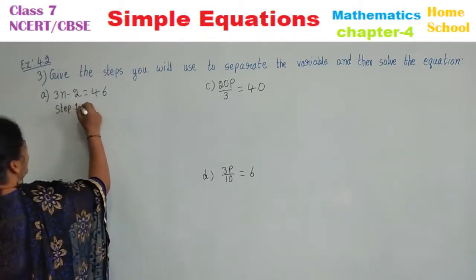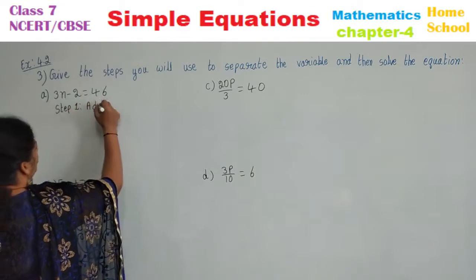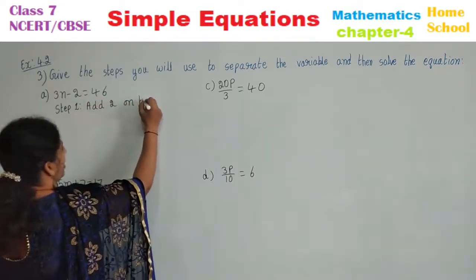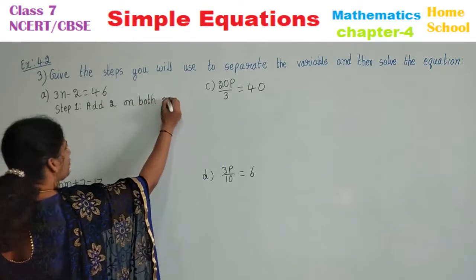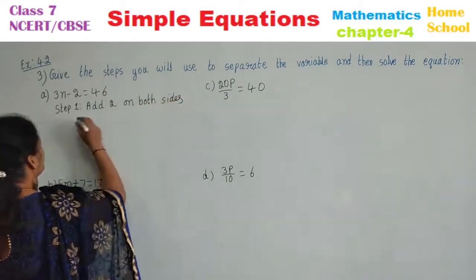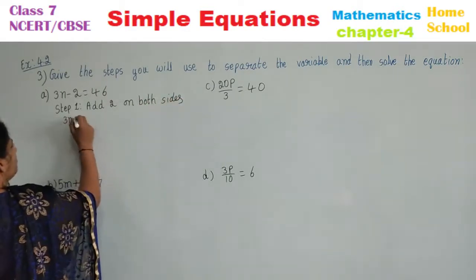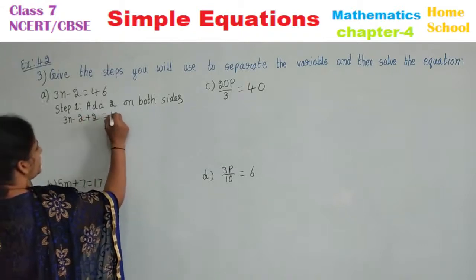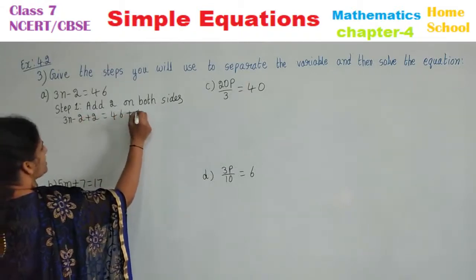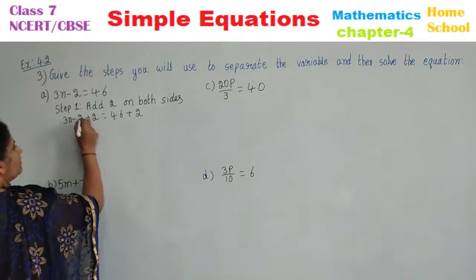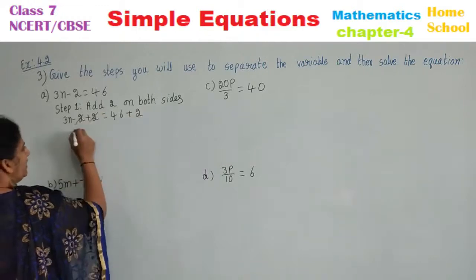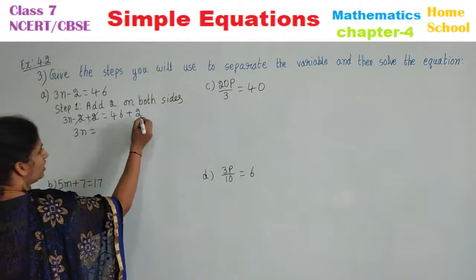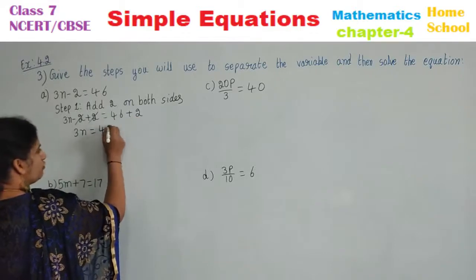Step 1: Adding 2 on both sides — on the left-hand side and also the right-hand side. 3N minus 2 plus 2 is equal to 46 plus 2. Minus 2 plus 2 will be cancelled. 3N is equal to 46 plus 2, which is 48.